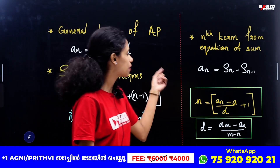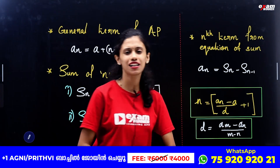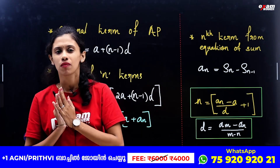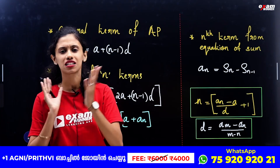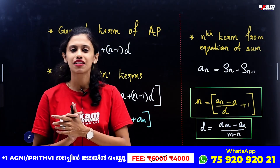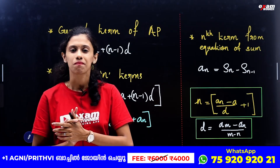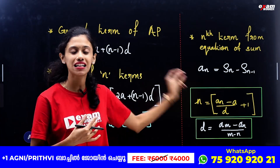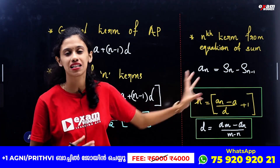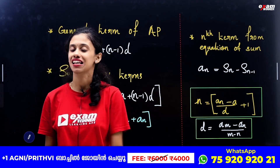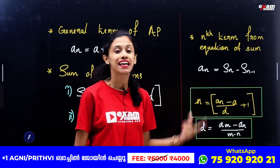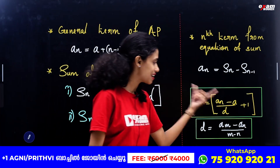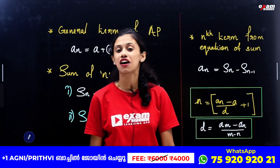We have roughly one term. What term is it? Let us see the first term and try to develop it. The common difference — if we enter the number of terms, our equation is equal to n is equal to aₙ minus a divided by d plus 1.